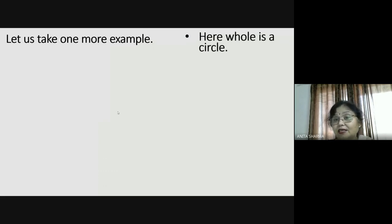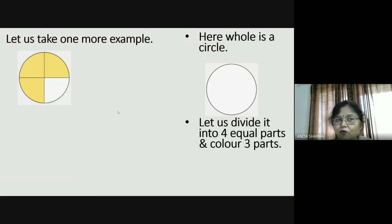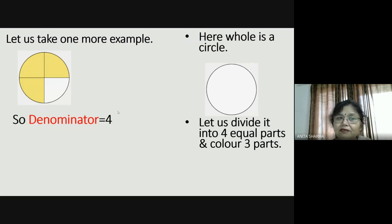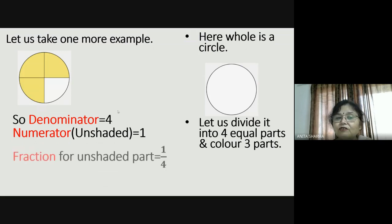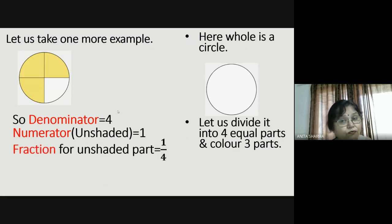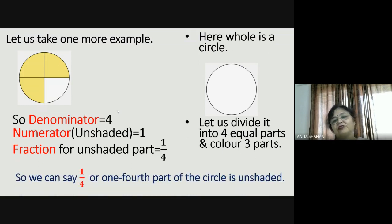Here the whole is a circle. Let us divide it into four equal parts and color three parts. It will look like this — four parts, one, two, three, four, and three are shaded. The denominator is four. Now I am asking: how much part of the circle is unshaded? That is one out of four. So the considered part is the unshaded part, which is one. The fraction for the unshaded part is one by four. We can say that one-fourth of the circle is unshaded.